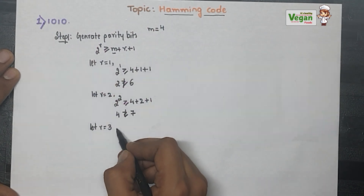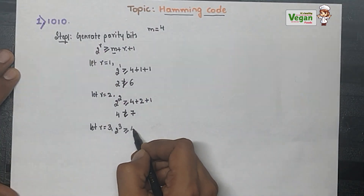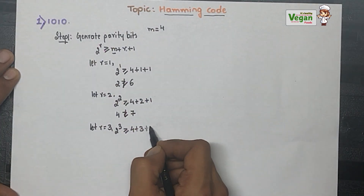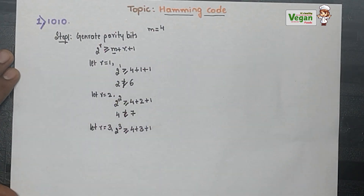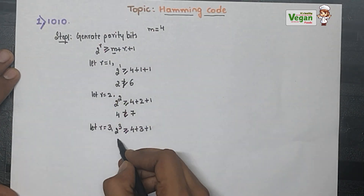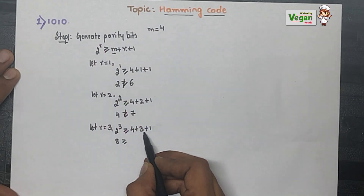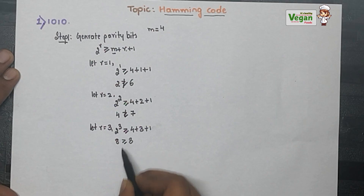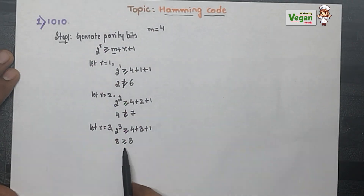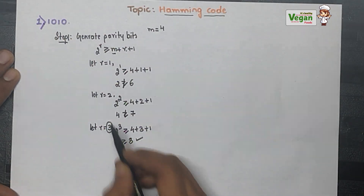Next, let r = 3. Then 2^3 ≥ 4 + 3 + 1, which gives 8 ≥ 8. The condition is satisfied (8 equals 8), so we choose r = 3.